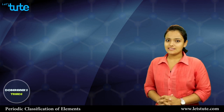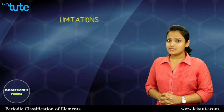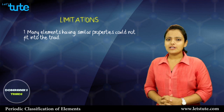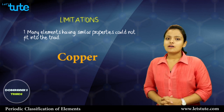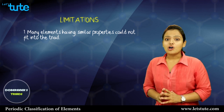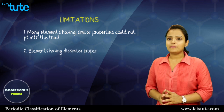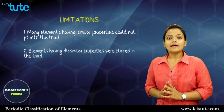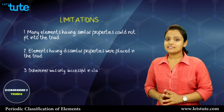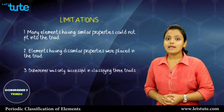Dobereiner's Triads was not very successful as it had a few limitations. The first and major limitation was that many elements having similar properties could not fit into a triad — for example, nickel, copper, magnesium, and iron all have similar properties but could not be placed in a triad. The second disadvantage was that elements having dissimilar properties were placed in the same triad. The third major disadvantage was that Dobereiner was only successful in classifying three triads, so this method of classification was not very successful.